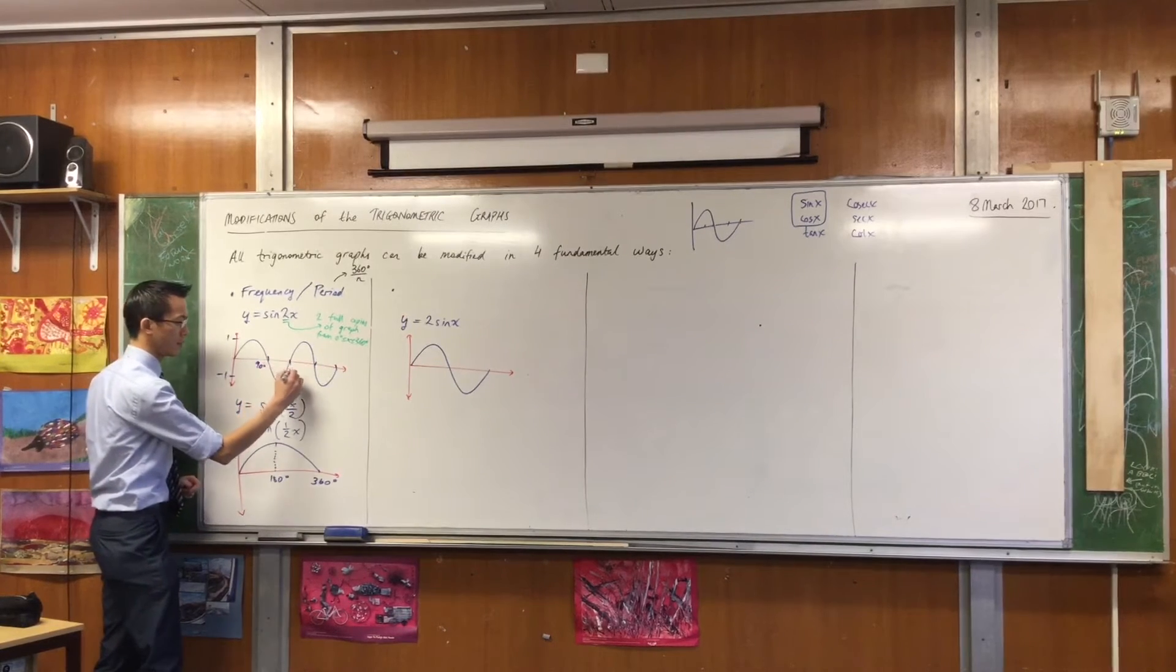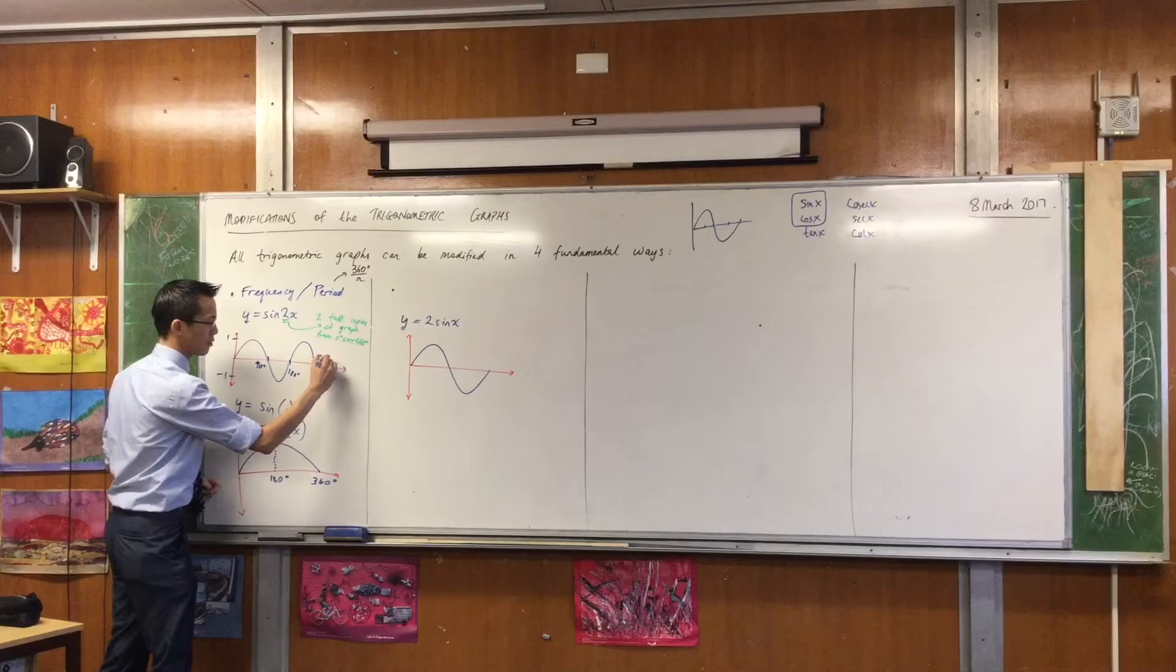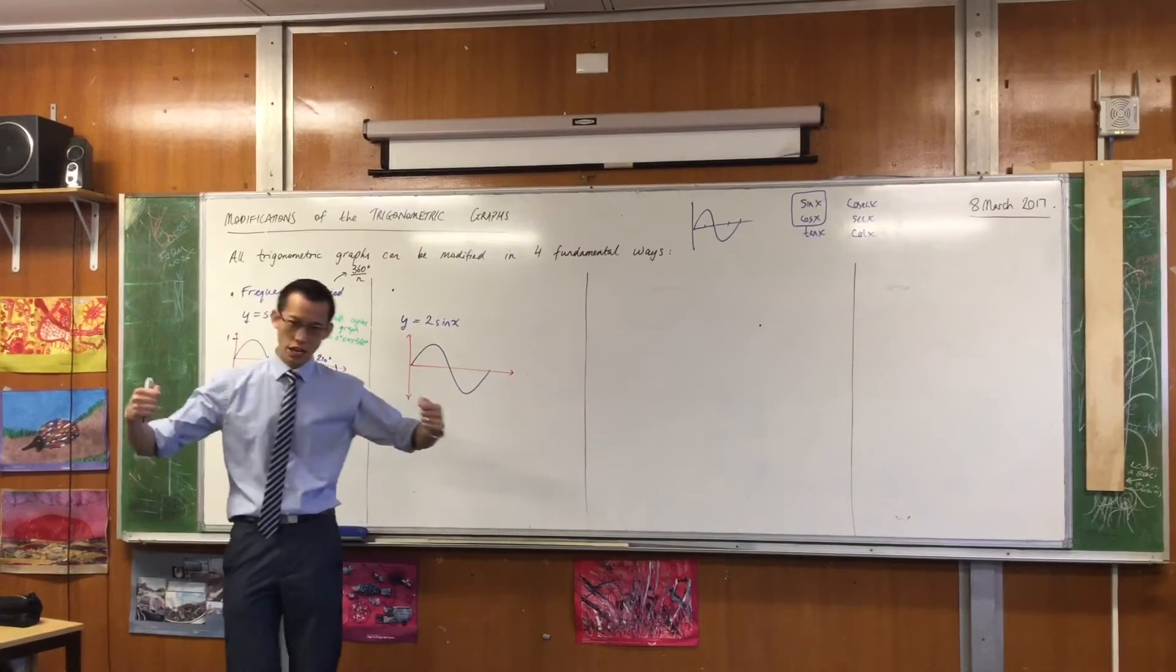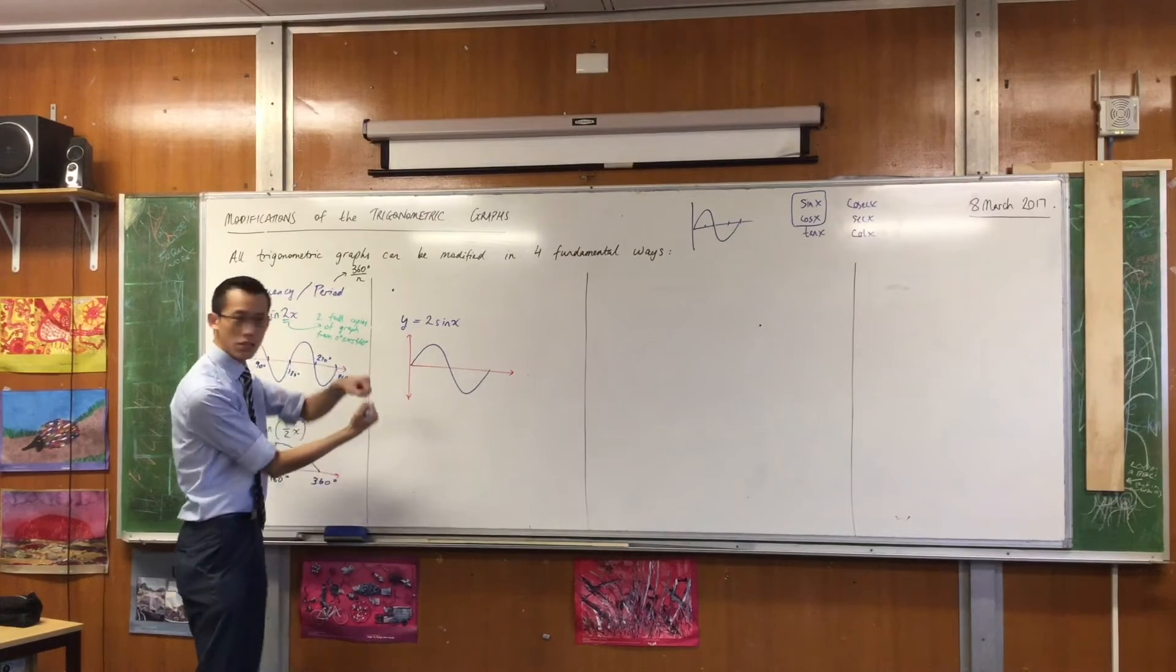It's these values in here that change. So now I've got more frequent intercepts. Sorry, my scale's a little bit off. Whereas over here, it's not changing horizontally, it's actually changing vertically.